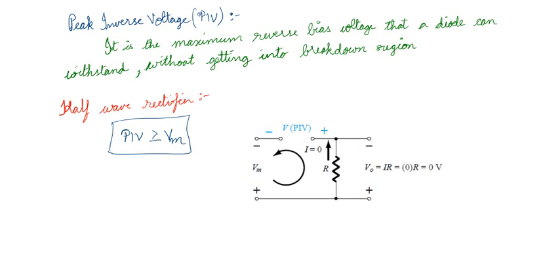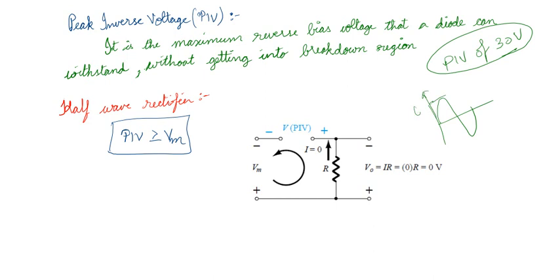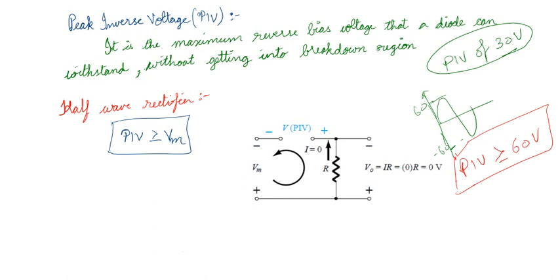For the half wave rectifier, how do you select the peak inverse voltage? Assume the silicon diode you are purchasing has a PIV of 30 volts. If you give an input signal where Vm = 60V, your diode will get into breakdown because PIV is 30 and Vm is 60 — the diode will be permanently damaged during the negative half. So if your input signal has Vm = 60V, you must use a diode whose PIV is greater than or equal to 60V — for example, a diode with PIV of 80V or 100V.